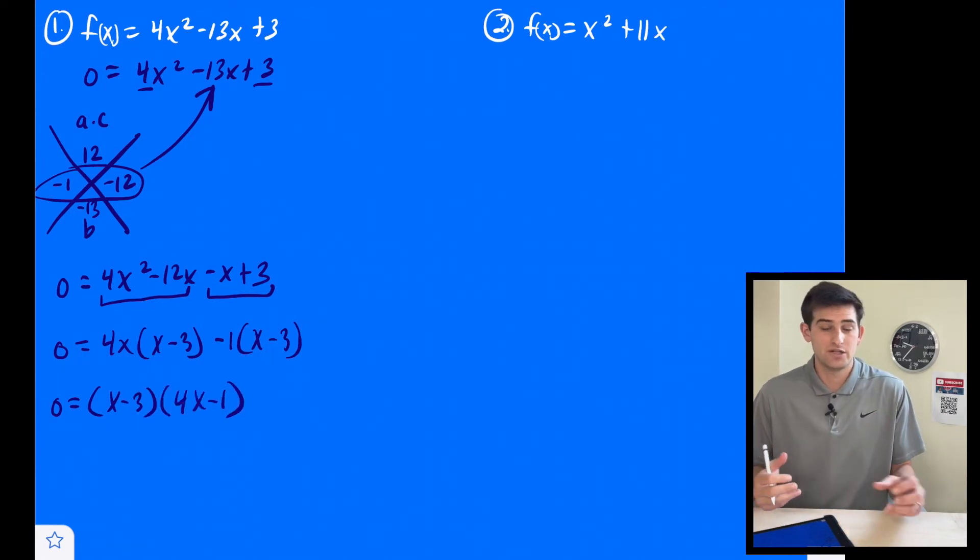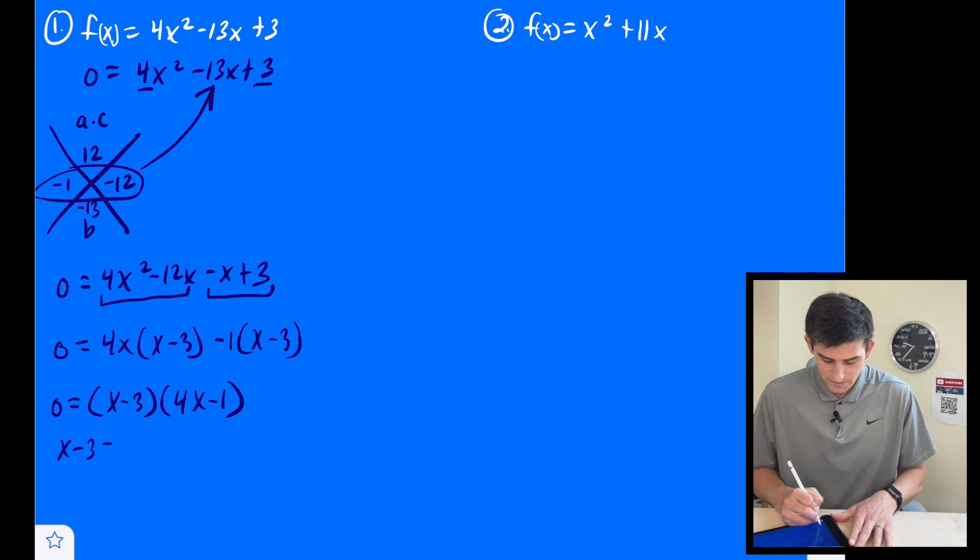Now we have two expressions, it's in factored form, it's equal to zero. Zero products property tells us we can set those equal to zero and solve. So we get x - 3 = 0. So x is equal to three.